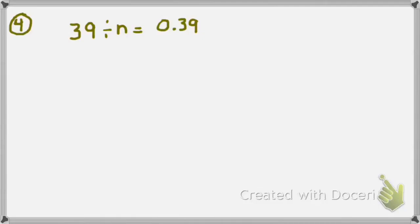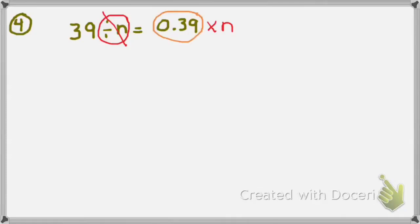Number 4 is a type of algebra problem you might see: 39 divided by n equals 0 and 39 hundredths. How do I solve an algebra problem? I see divided by n, so I'll circle that. I'm going to move it to the other side and write the opposite operation. What's the opposite of division? Multiplication. So I'll say times n. Now I have 39 equals 0 and 39 hundredths times n. I need to turn 0 and 39 hundredths into 39.